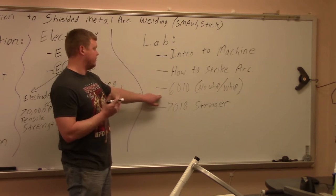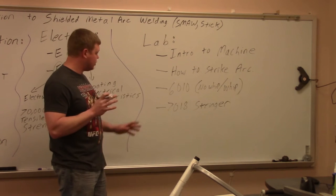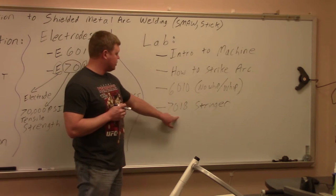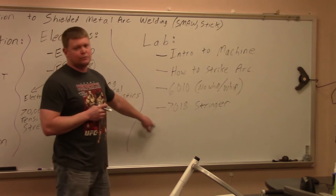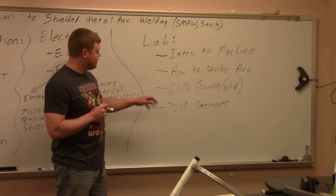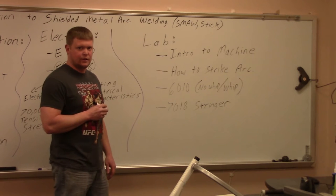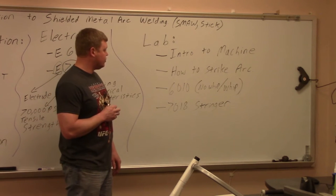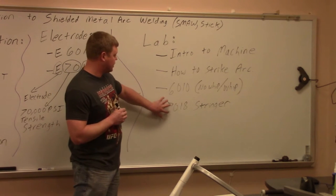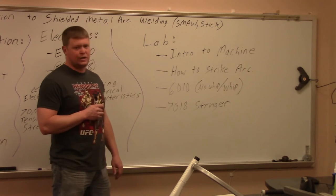6010 sometimes is referred to as whip rod. It's got a lot thinner of a flux, like I said, so we'll show you that. Then we'll do a stringer of 7018. 7018 is a much prettier weld. 6010 has a lot of spatter, and it's usually used in root passes. So what we'll do is we'll show you what the 6010 and 7018 look like now, and then we'll go out to the lab and get into the machines and how to strike an arc.